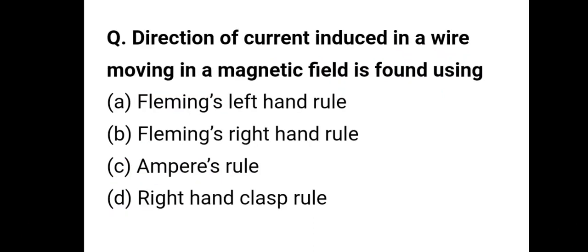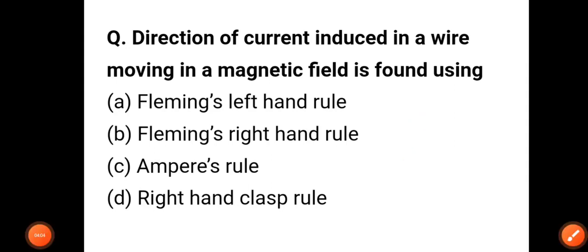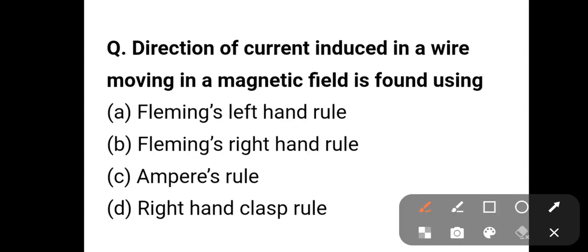Question number six: the direction of current induced in a wire moving in a magnetic field is found using Fleming's right-hand rule.